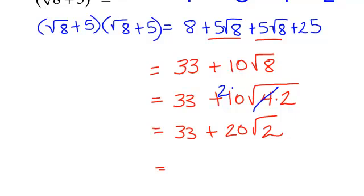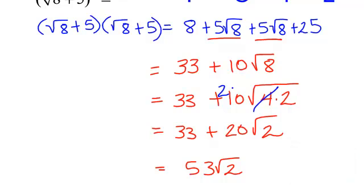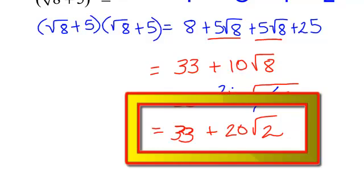Now am I done? Do you think the answer is 53 radical 2? No — I can't put those together. I can't add those because they are not like radicals. 33 and 20 radical 2 are unlike terms, so the final answer is 33 plus 20 radical 2. I'm done.